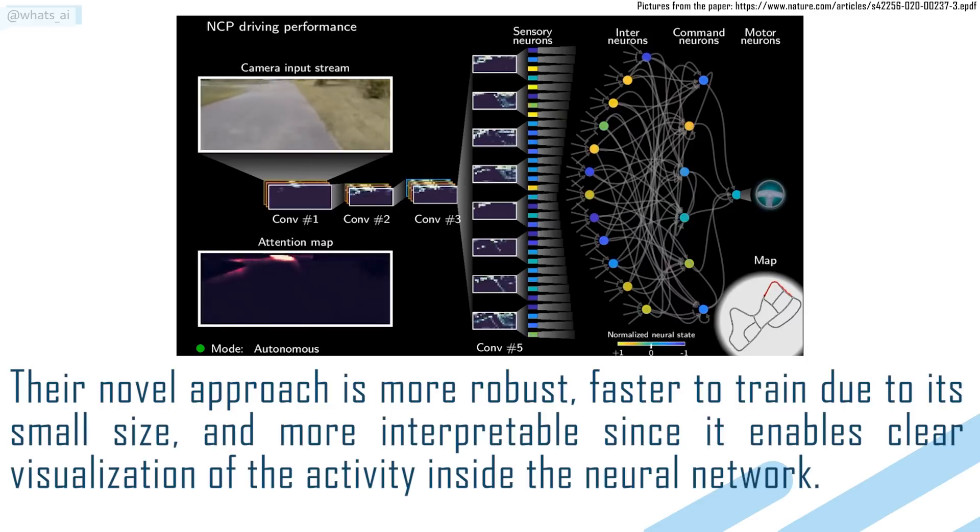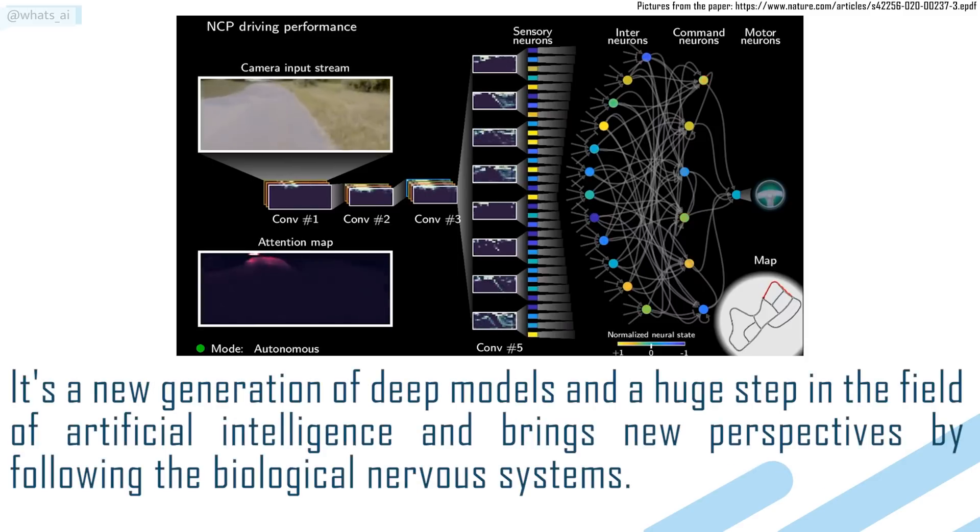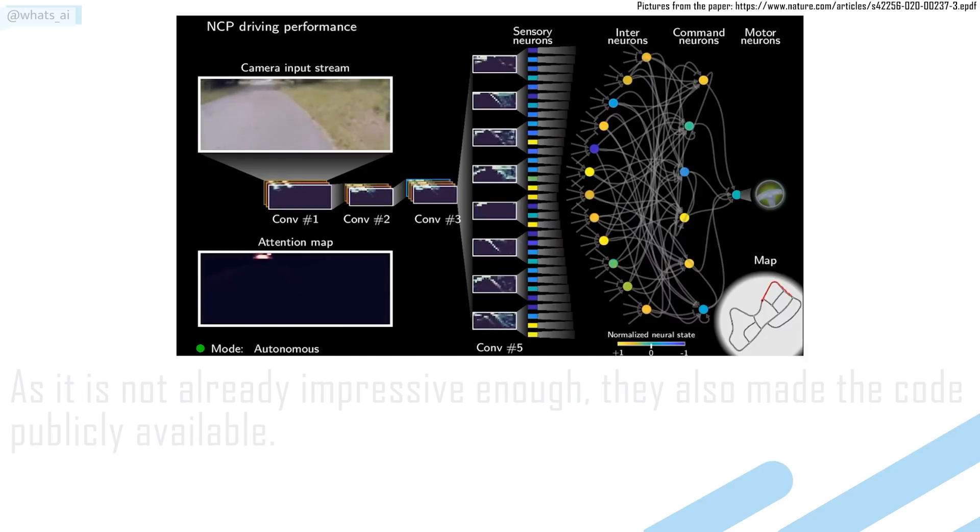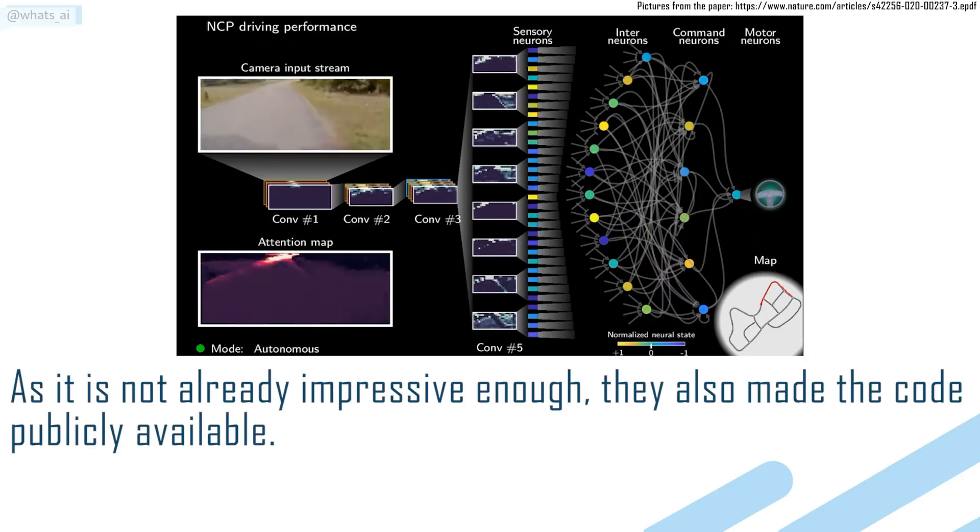Their novel approach is more robust, faster to train due to its small size, and more interpretable since it enables clear visualization of the activity inside the neural network. It's a new generation of deep models and a huge step in the field of artificial intelligence and brings new perspectives by following the biological nervous system. As it is not already impressive enough, they also made the code publicly available.